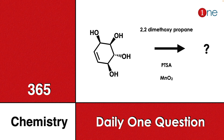Welcome to One Chemistry. This is the 365 Chemistry Series — one daily question for you. Here you have cyclohexane with four hydroxy groups: one is below the plane, three is above the plane. You are using dimethoxypropane and PTSA, and manganese dioxide. You have to guess what will be the final product.